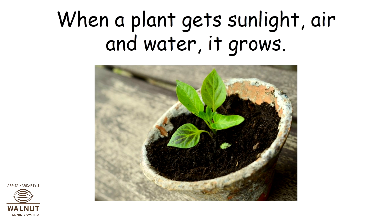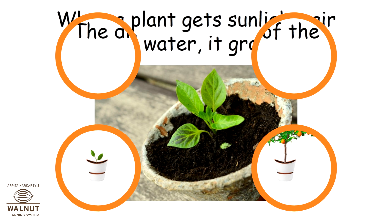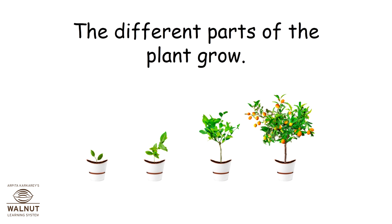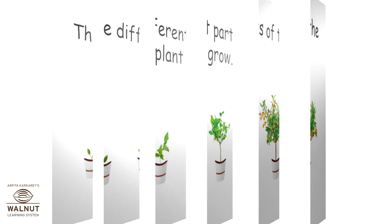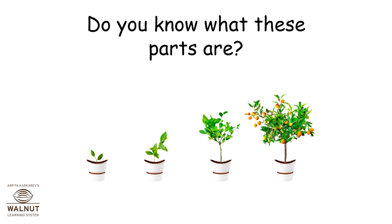When a plant gets sunlight, air and water, it grows. The different parts of the plant grow. Do you know what these parts are?